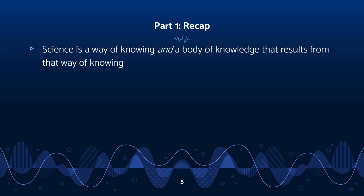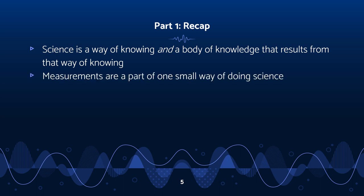Recapping part one: we talked about science as both a way of knowing and a body of knowledge that results from that way of knowing — science has a dual nature. It's important to realize that science has given us methods, a bag of tools, to really learn things and deeply understand things about our universe. One way we can learn about that universe is by doing measurements, and that's a big thing in audio right now, but we need to remember that measurements are but one part of one small way of doing science — just doing measurements is not itself doing science.